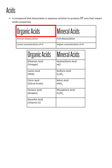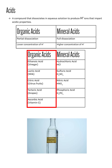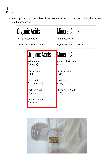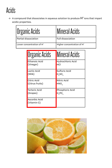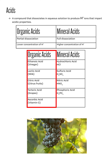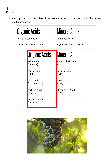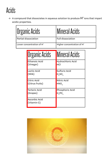Organic acids are weak acids that only partially dissociate in aqueous solution to produce a lower concentration of hydrogen ions. Here are some examples of organic acids: vinegar is also known as acetic acid, milk contains lactic acid, citric acid can be found in citrus fruits, tartaric acid can be found in grapes and pineapples, and vitamin C pills contain ascorbic acid.